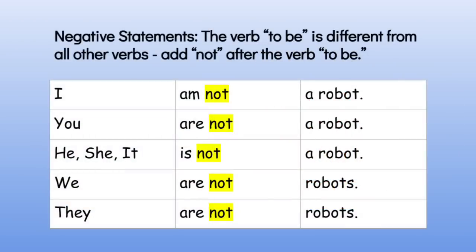Here are negative statements with the verb 'to be.' I am not a robot. You are not a robot. He, she, it is not a robot. We are not robots. They are not robots.